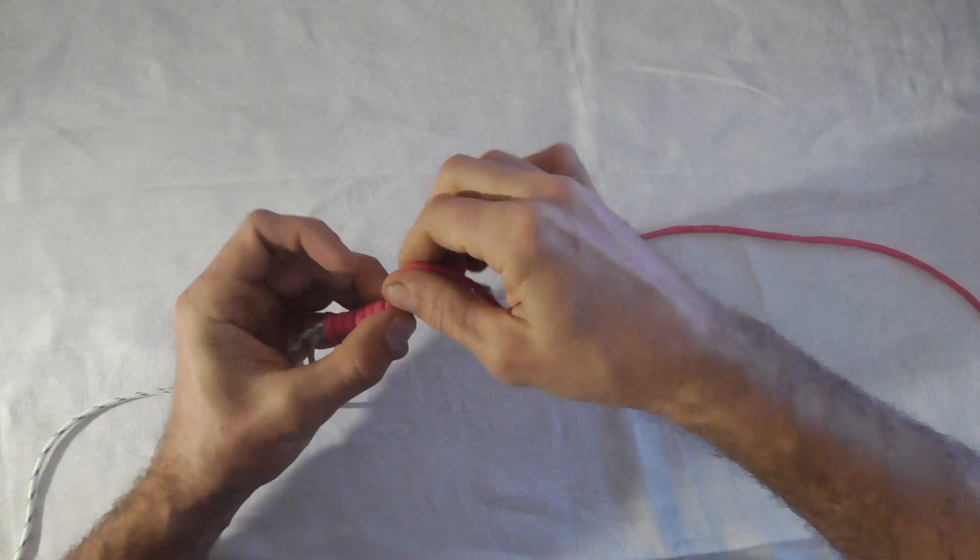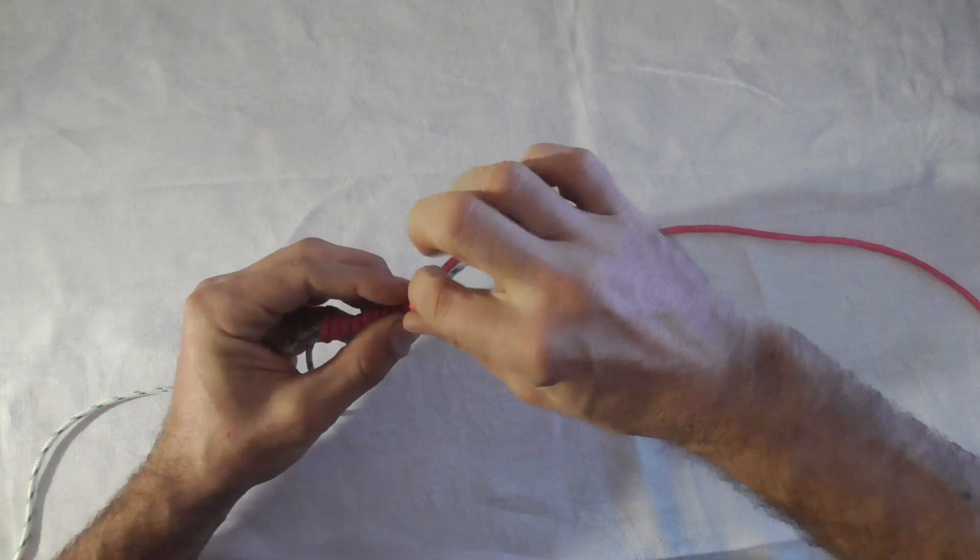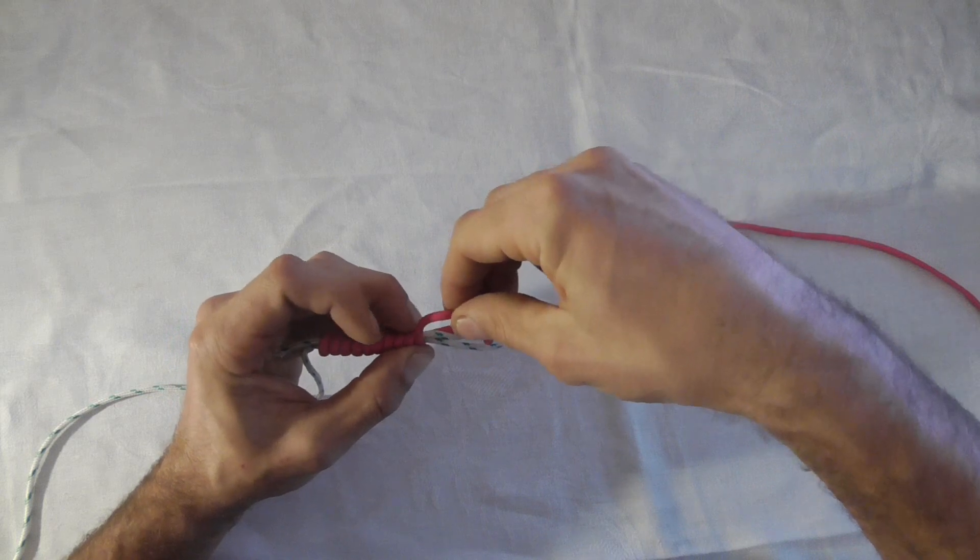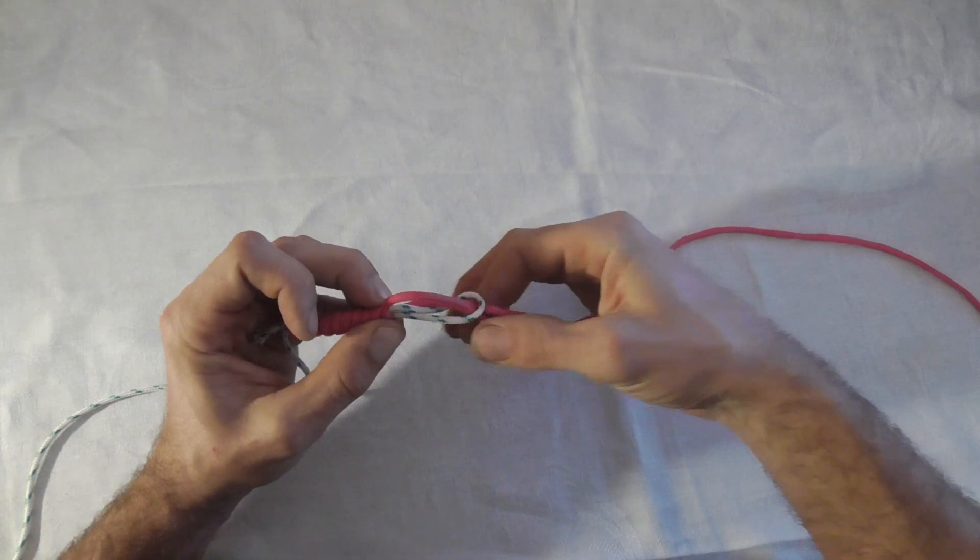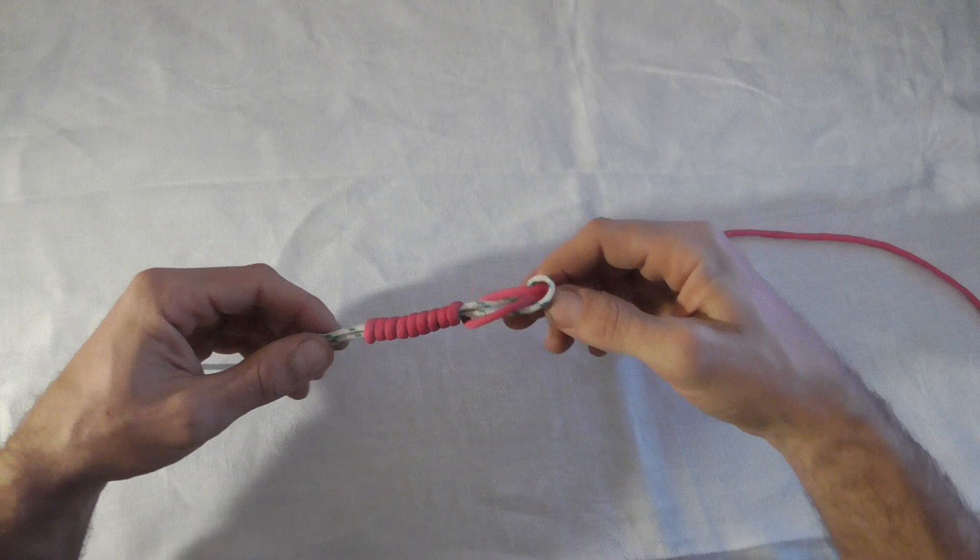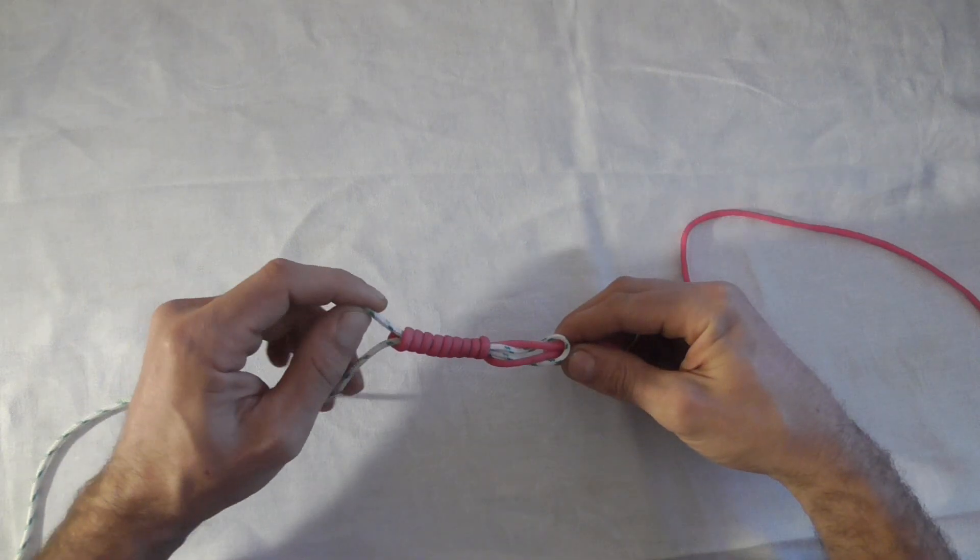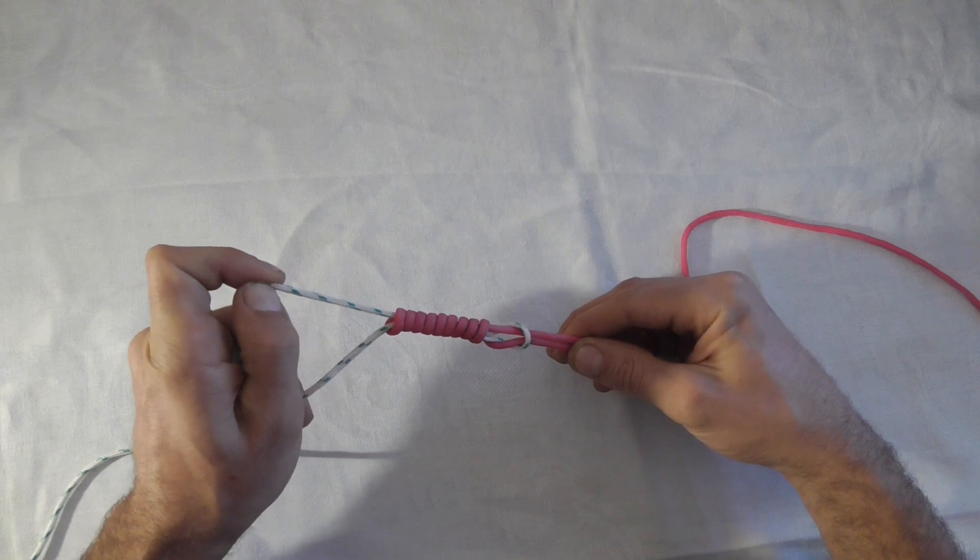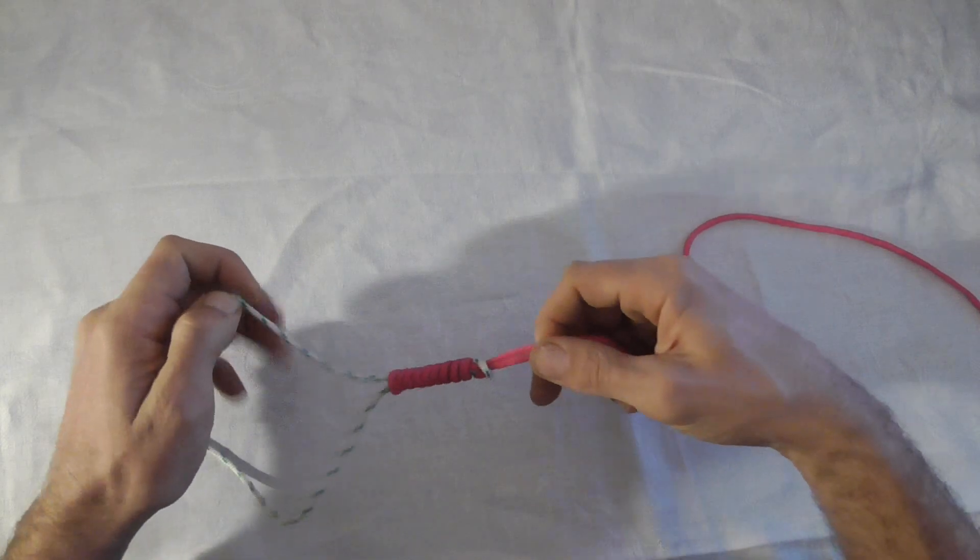And then we want to tuck that end back down through the loop and to tighten it up we're going to pull on this end and you will see the loop tightens.